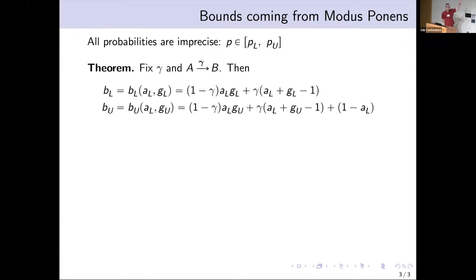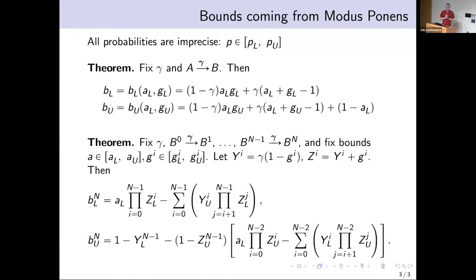We were able to get bounds for modus ponens using one of these generalized implications. And, of course, gamma equals zero, gamma equals one reduces to the standard classical case. Then we were able to extend this to arbitrary implication chains, so a generalization of modus ponens. And maybe a last comment.